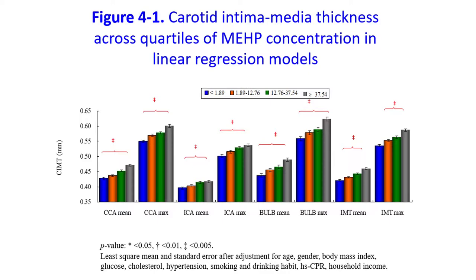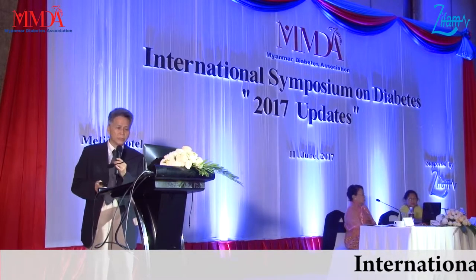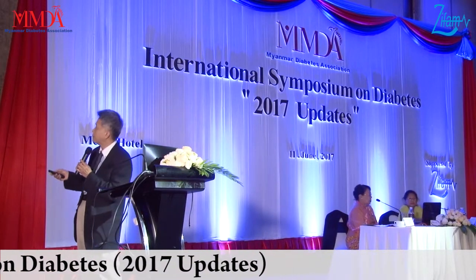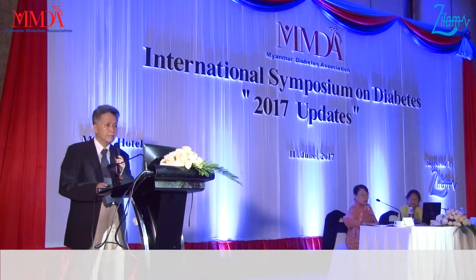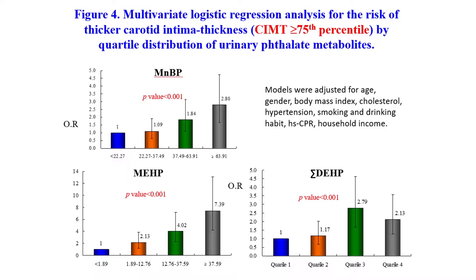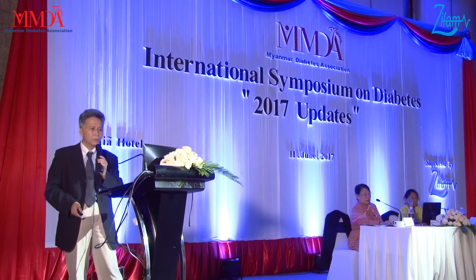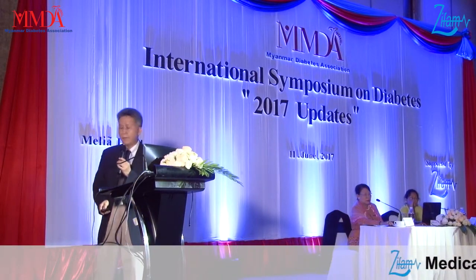The dose-dependent pattern shows that MEHP exposure increases the subclinical atherosclerosis marker. We also looked at MMEHP and the picture is similar. Using multiple logistic regression to examine elevated carotid IMT by quartile, we found that MMEHP increases risk 2.8-fold compared to the lowest quartile. MMEHP at very high levels shows seven times the risk. Summation ΣDHP is also increased. In summary, phthalate urinary metabolites are significantly and positively associated with carotid IMT — including CCA, ICA, and overall mean IMT — after controlling for associated factors. The major exposures identified are MMEHP and summation ΣDHP.